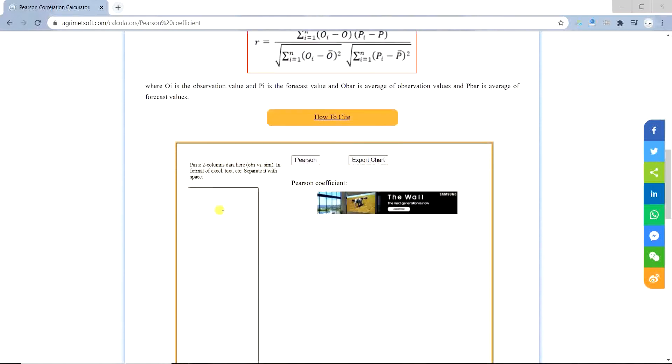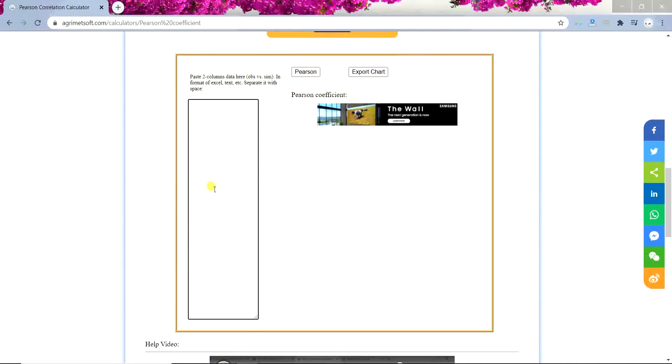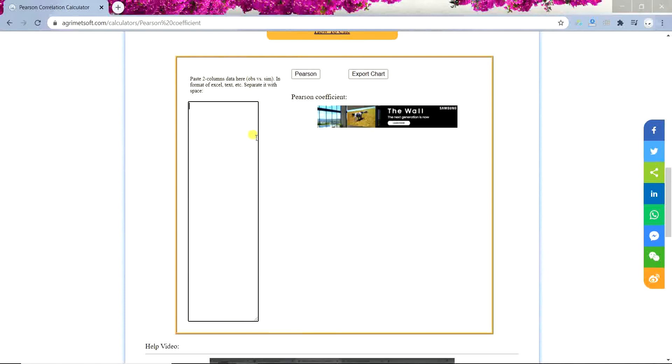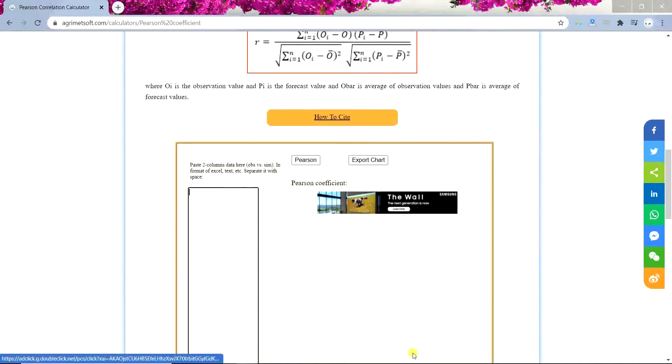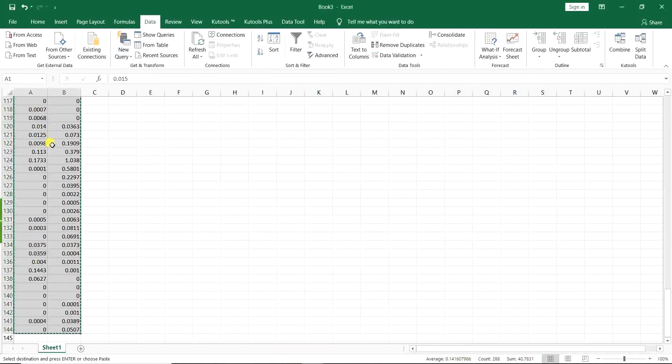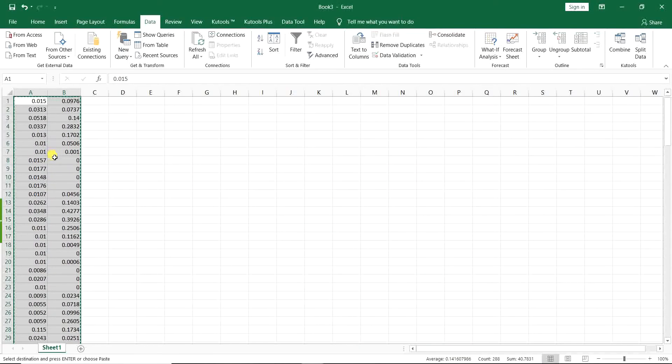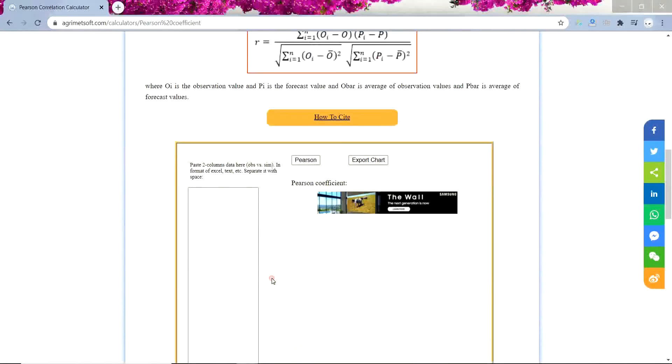I go straight to the tool provided here. You need to have two data, like two different data sets and I have it right here. You just want to copy it and then go there, paste it.